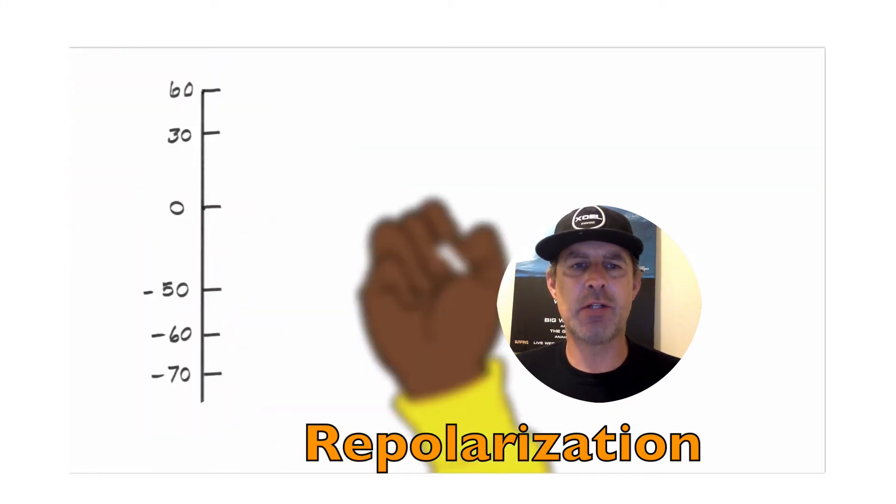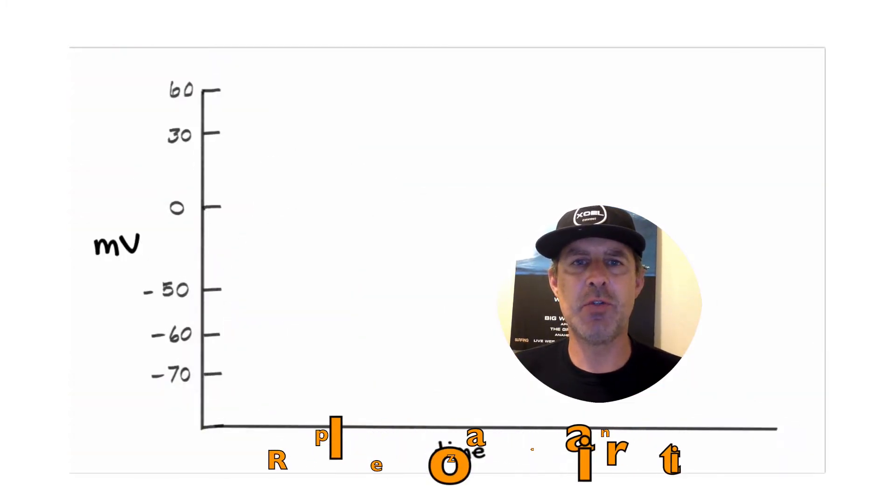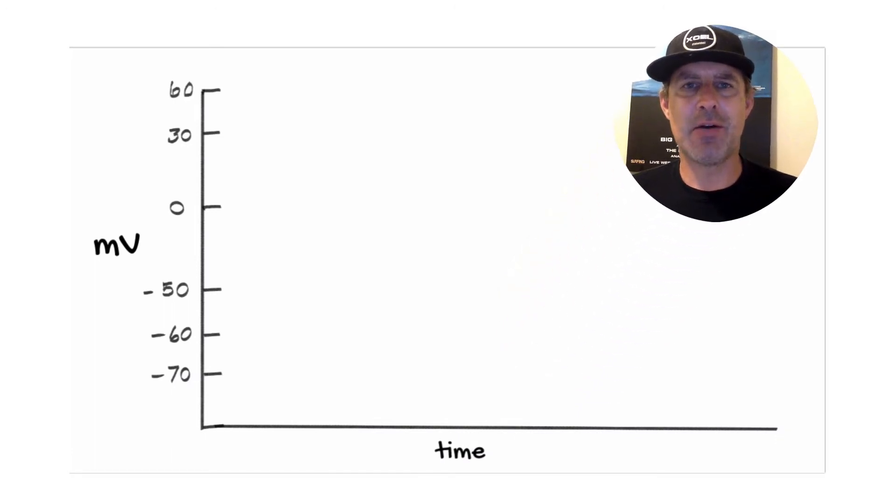So one thing we've talked about in previous videos is that a resting cell has a voltage, a difference in charge between the outside and the inside of the cell. The inside of the cell is negative, and that charge is generally about negative 70 to negative 90 millivolts. For this video, we'll suggest it's negative 70 millivolts, which we see down here.